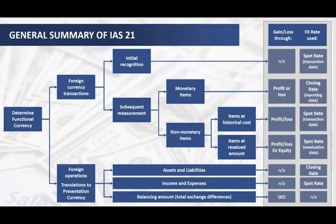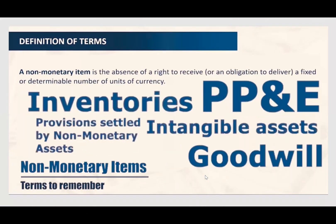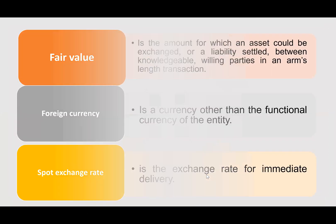For a foreign operation — whether a subsidiary, strategic business unit, branch office, or liaison office — assets and liabilities are translated at the closing rate, and income and expenses are translated at the spot rate. The balancing amount is recognised in OCI (Other Comprehensive Income).